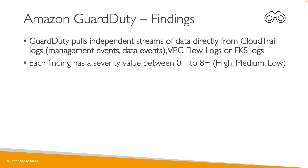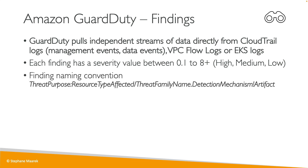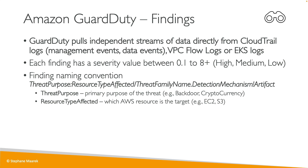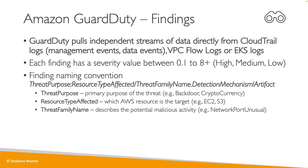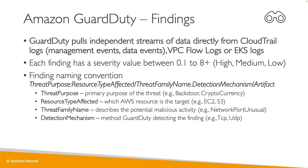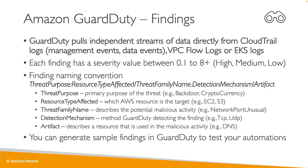Each finding will have a severity value, for example from 0.1 to 8+, and will be categorized as high, medium, or low. There is a naming convention: the threat purpose is the primary purpose of the threat; the resource type affected is EC2, S3, etc.; the family name of the threat could relate to, for example, network port unusual; the detection mechanism is how it detected the finding — TCP, UDP, etc.; and the artifact is what is being used in the malicious activity, for example DNS.